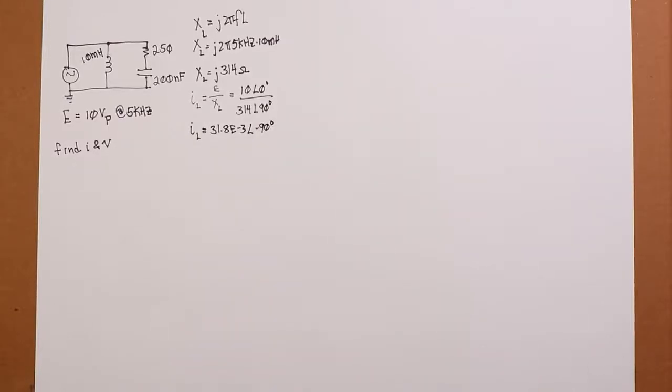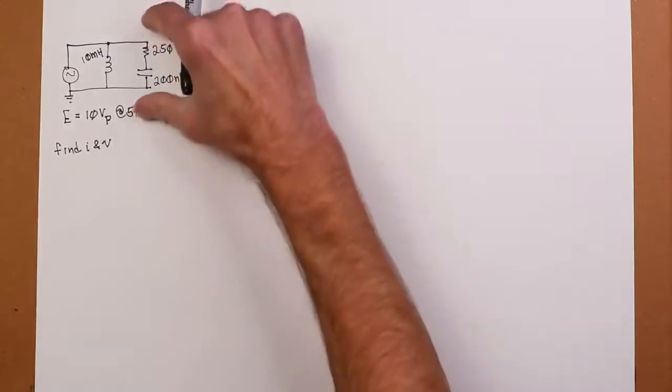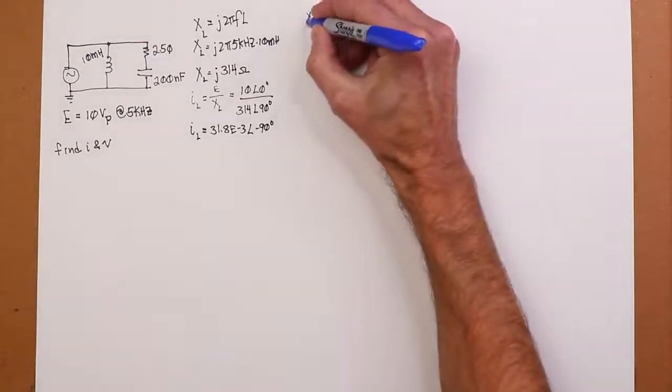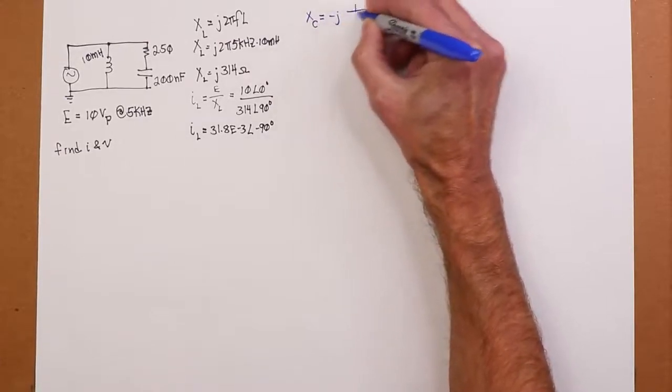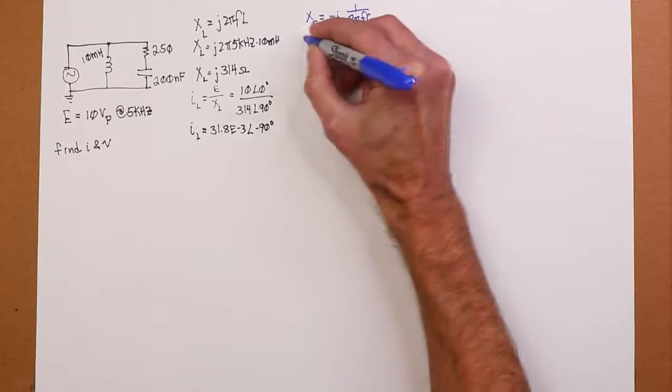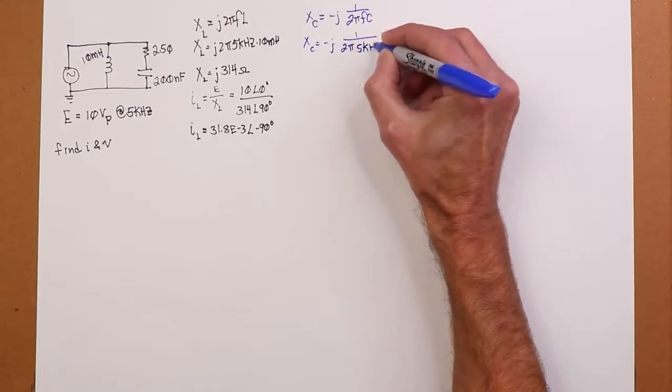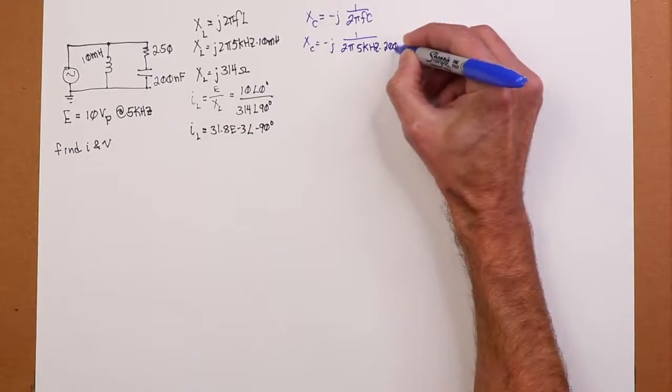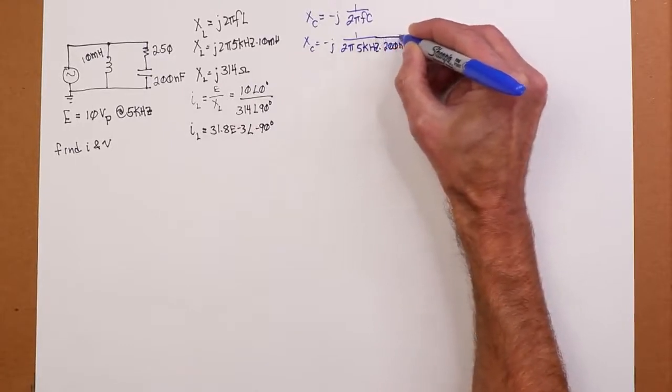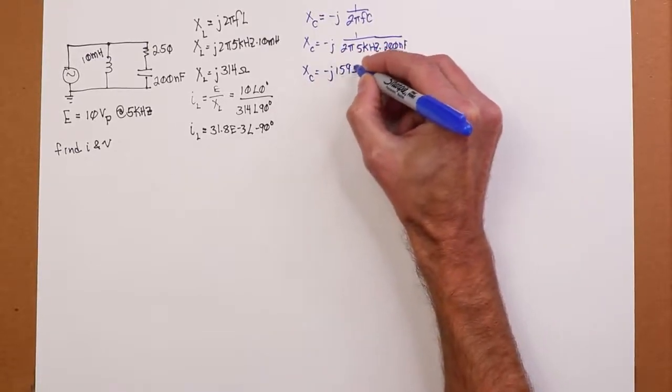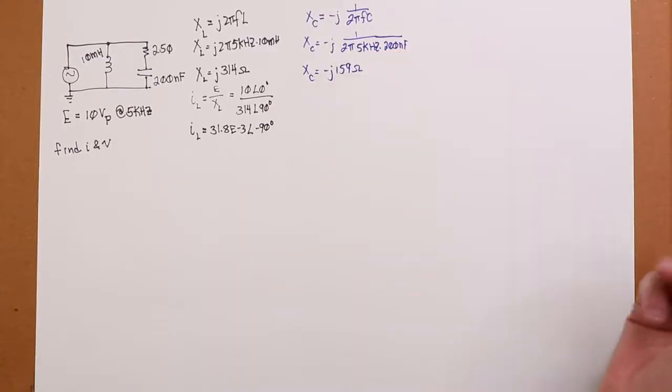Knowing that we know the voltage, we could immediately find the current through the inductor. So IL, just basically using Ohm's law, would have to be the applied potential E divided by X sub L. So that's 10 at an angle of zero divided by XL, which is 314 at an angle of 90 degrees. And IL is going to work out to 31.8 mils at an angle of minus 90 degrees. Remember, current can't change instantaneously in the inductor, so it's going to be lagging the voltage.